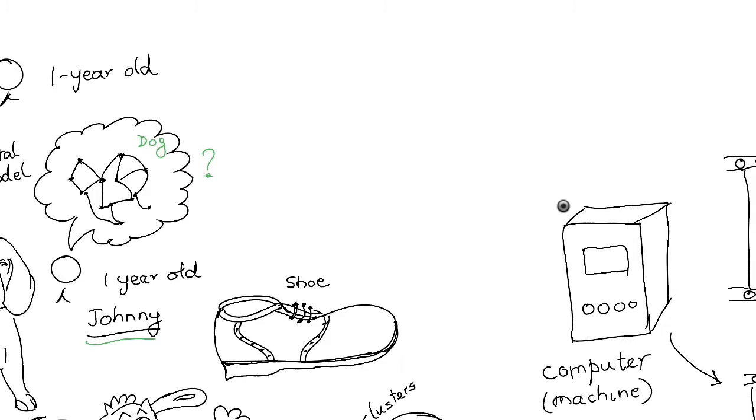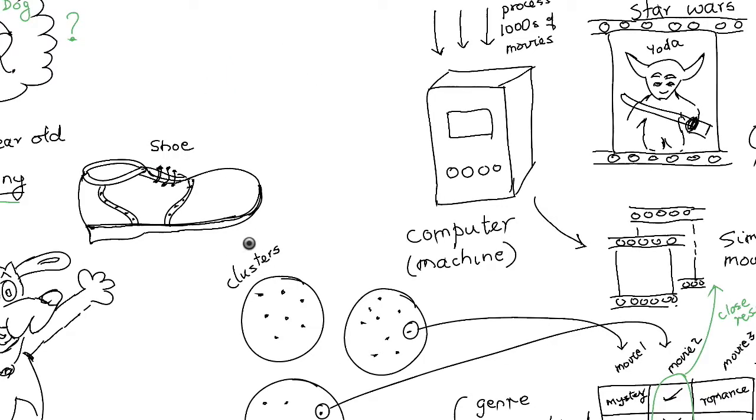The computer can definitely process lots of information about thousands of movies and refine its model but humans can't. On the other hand, this clustering based model is not going to help to predict say your company's growth trajectory over the next five years.